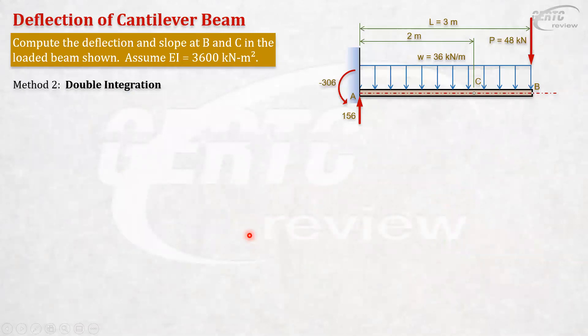We already solved this one using area moment method. We will compute the requirement for the slope and deflection at B and at C. So we got the answer using the area moment method. Now let's have double integration method. The advantage of this method is that what you get is not just deflection, but the equation of the elastic curve.